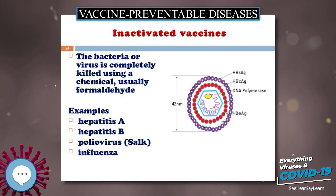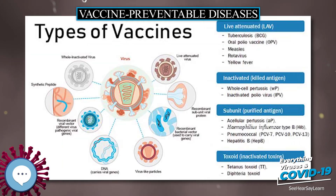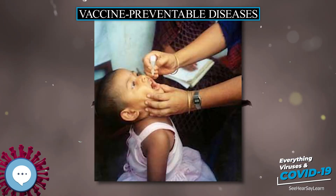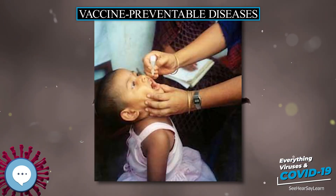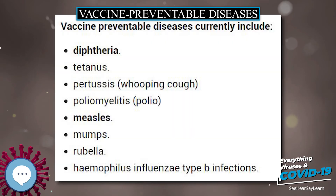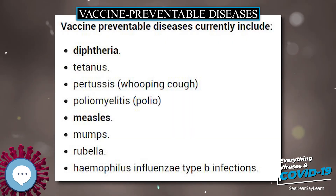Vaccine-preventable deaths are usually caused by a failure to obtain the vaccine in a timely manner. This may be due to financial constraints or to lack of access to the vaccine. A vaccine that is generally recommended may be medically inappropriate for a small number of people due to severe allergies or a damaged immune system.